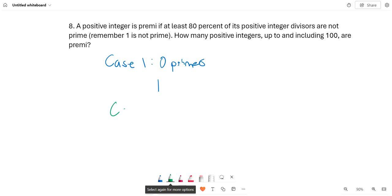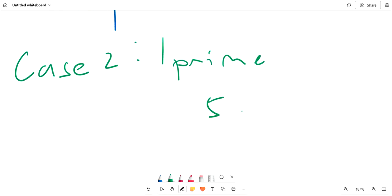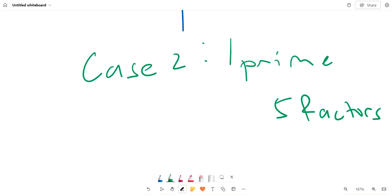Case 2: 1 prime. We have to have at least 5 factors because we need 80% to be non-prime. So we have p1 to the 4th or greater as the prime factorization. We can have 2 to the 4th or 3 to the 4th, but we can also have more factors than 5, like 2 to the 5 or 2 to the 6.